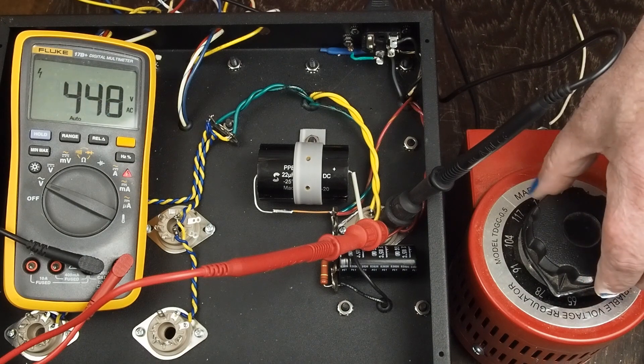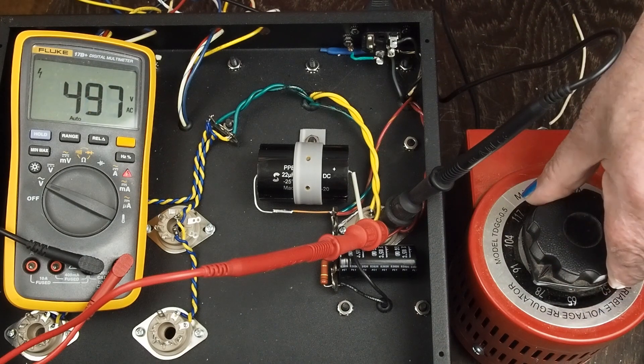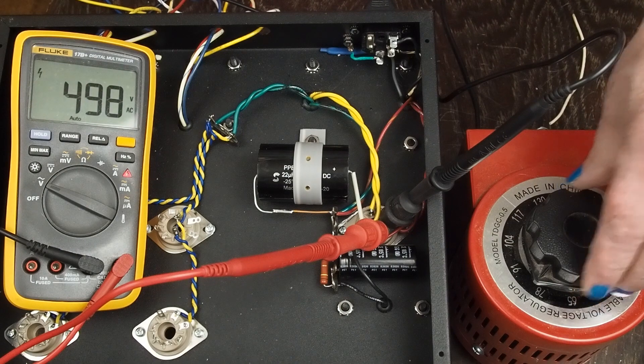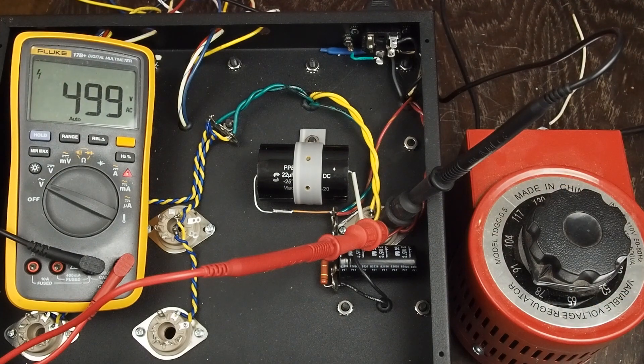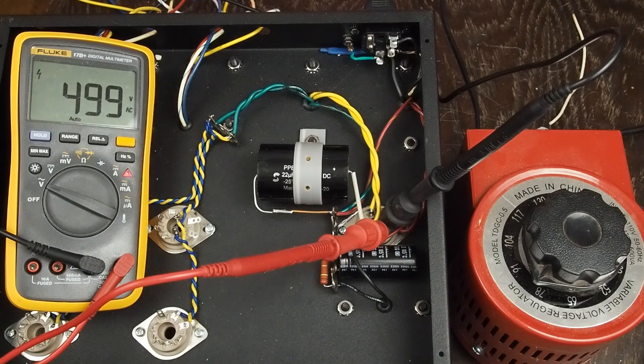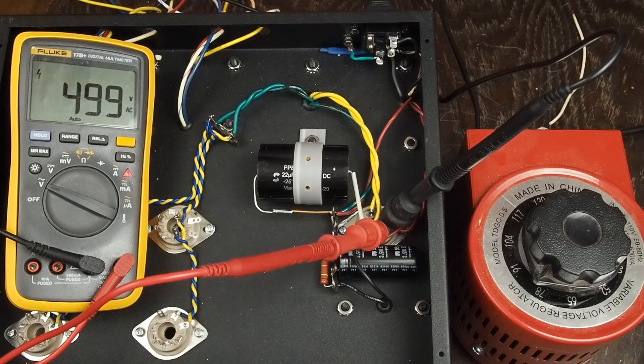So let's pull it up. There's 500 volts. I don't want to push what this digital meter might be able to handle voltage-wise, and so we know we're getting high voltage there. That's all we need to see.